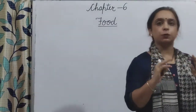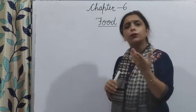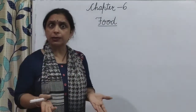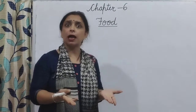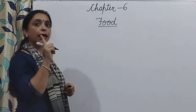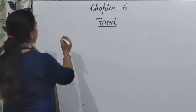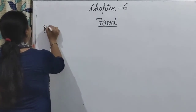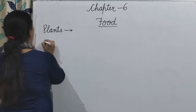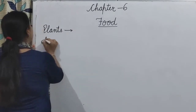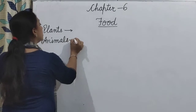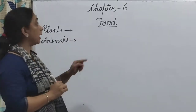There are many types of food. Do you know from where we get food? We get food from plants and animals. हमें plant से भी food मिलता है और animals से भी food मिलता है।